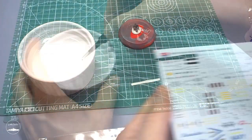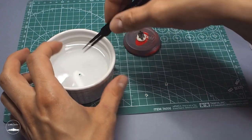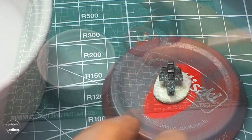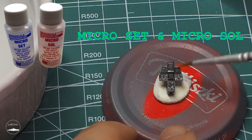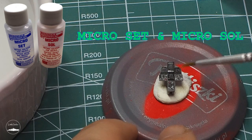I cut out all the necessary pieces and as usual, using the microset and microsol liquids, I started placing them on the elements of the model.